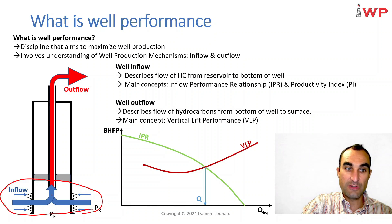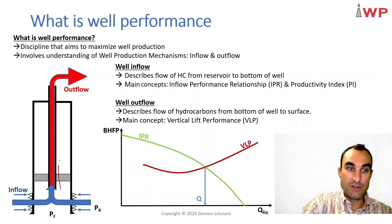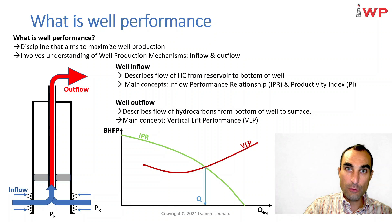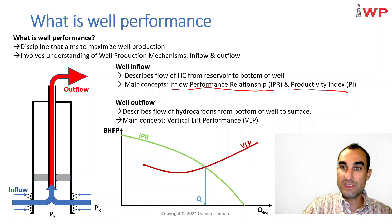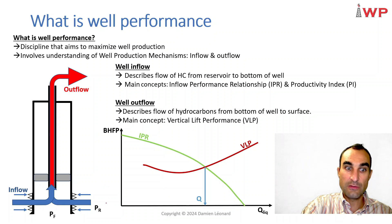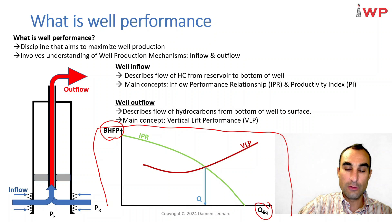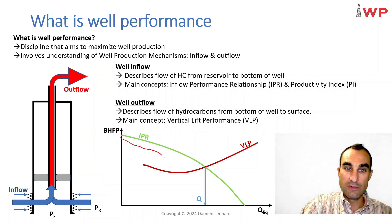That is the one represented in blue in the schematic. For the well inflow, the main concept is the inflow performance relationship or the productivity index — IPR and PI — and it is typically represented on a plot with the bottom hole flowing pressure on the y-axis and the liquid rates on the x-axis. On such a plot, the IPR is represented by the green curve.